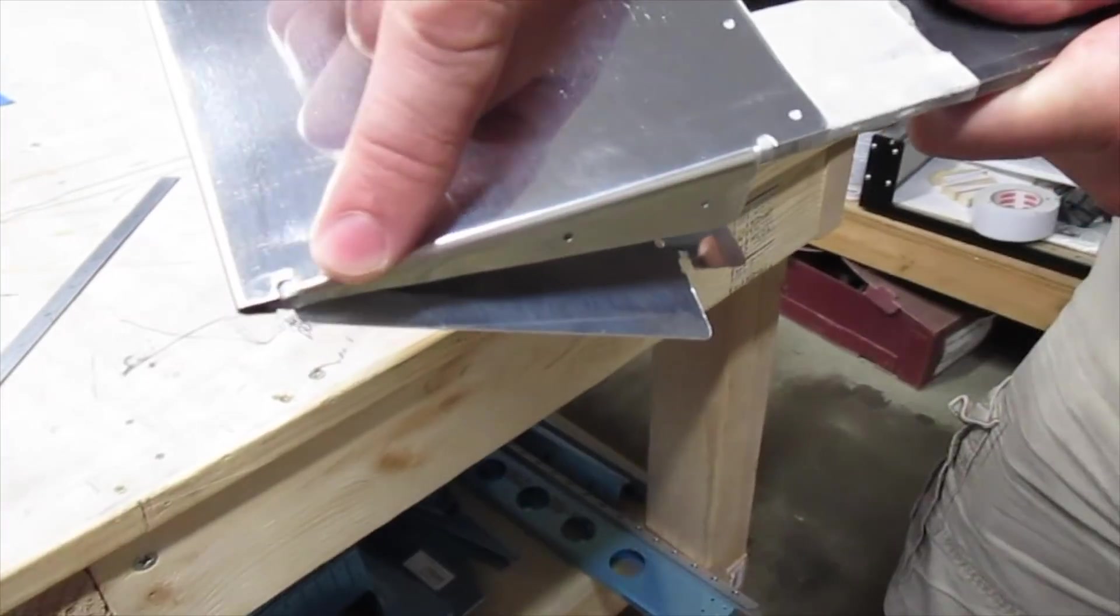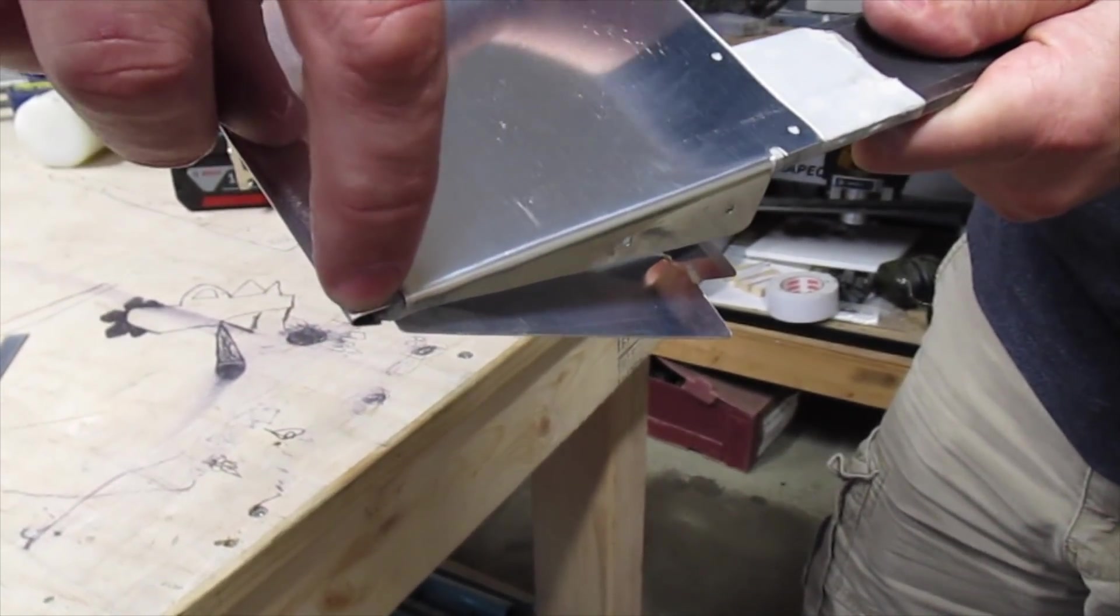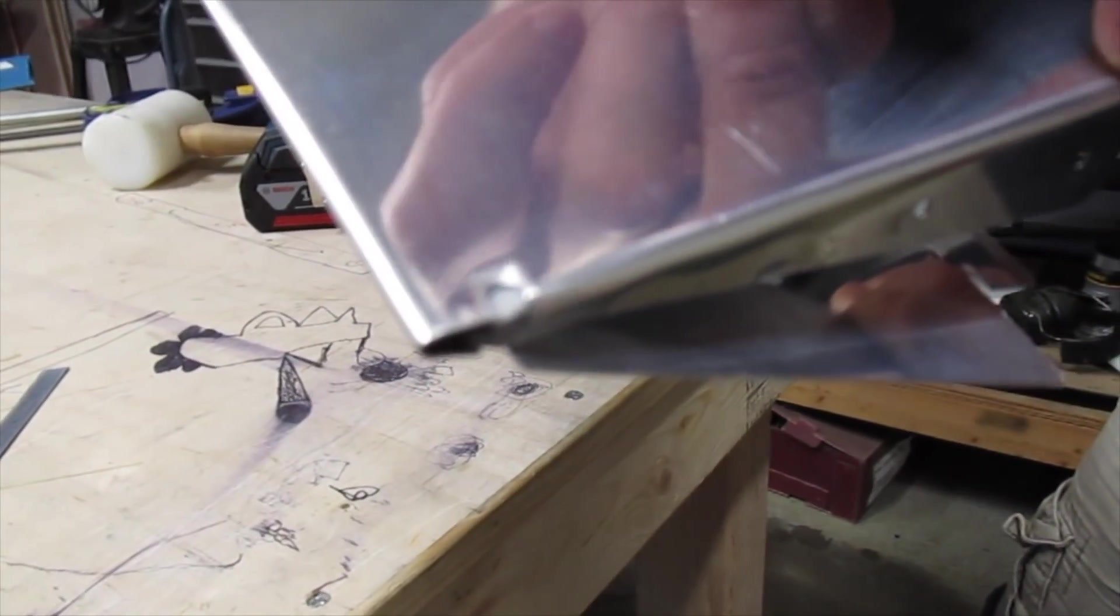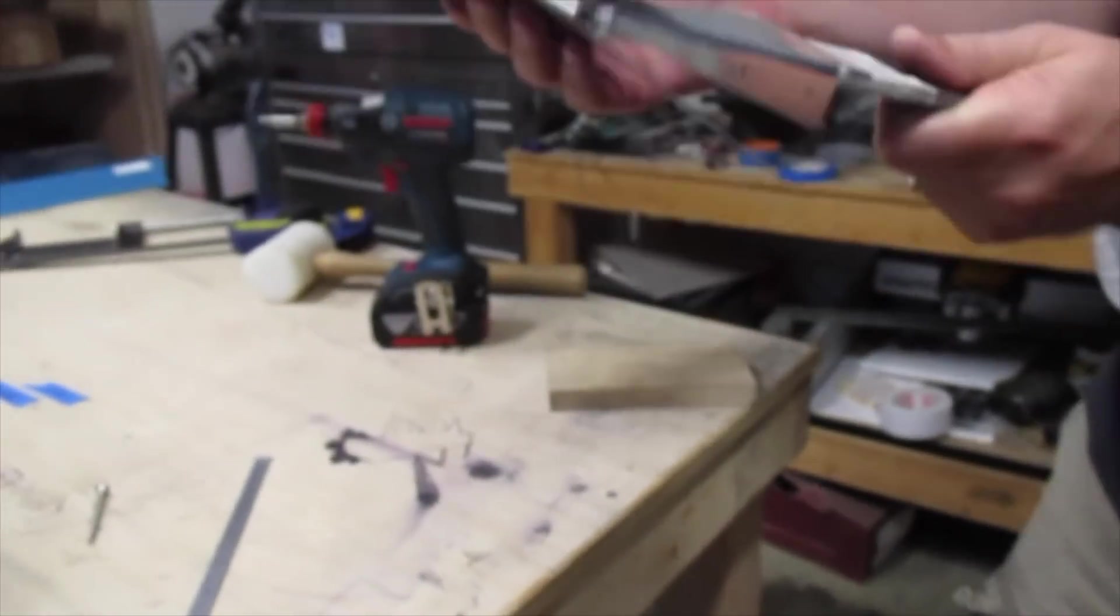This is nice and crisp here and this edge of the trim tab is right in alignment with the bend and it's in alignment all the way up. So that's a pretty good looking bend. Now it needs to be bent just a little bit more. I can do that by hand here after the video as I work the other tabs, but all in all, I'm pretty happy with that.